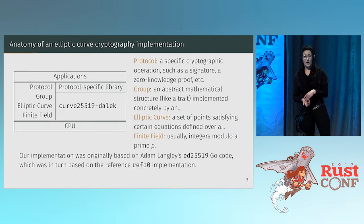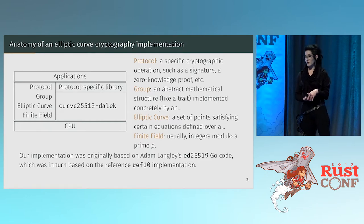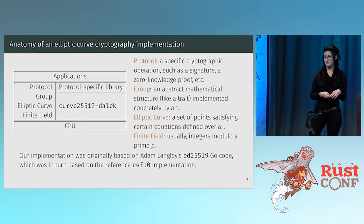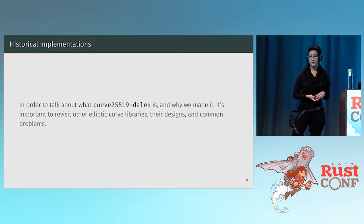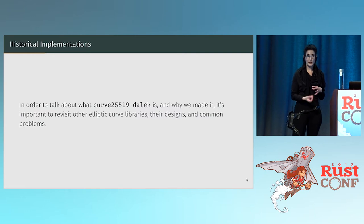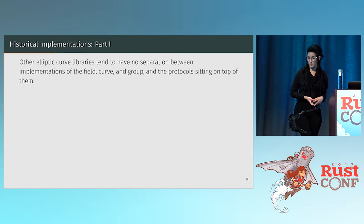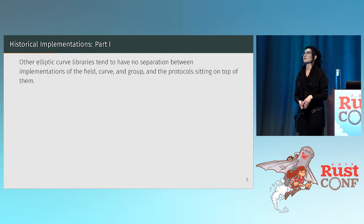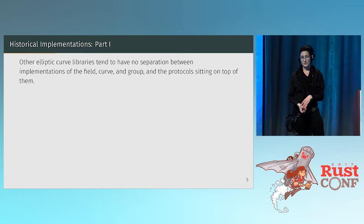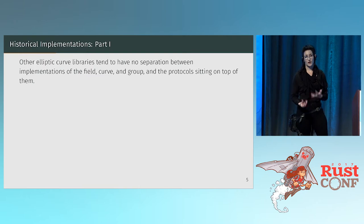Our implementation was originally based off Adam Langley's ed25519 Go implementation, which itself was based off the reference ref10 implementation. To talk about what curve25519-dalek is and why we made it, it's important to discuss the history of other elliptic curve libraries, their designs, and some common problems. Other elliptic curve libraries tend to have no separation between the protocol they're implementing and their implementation of the field, the curve, and the group.